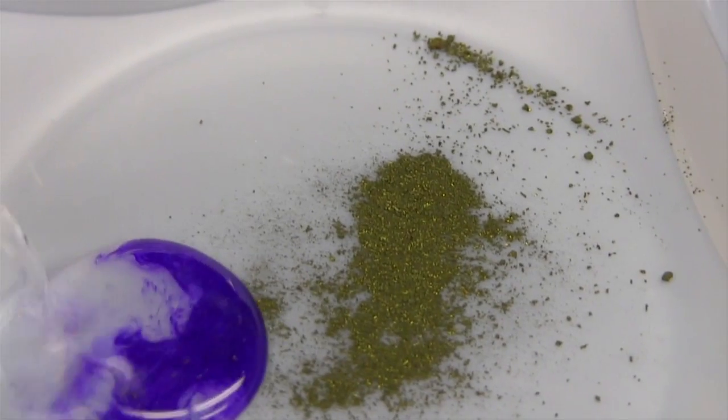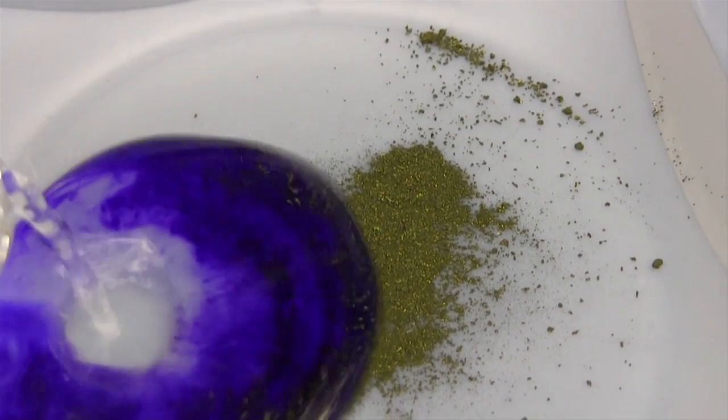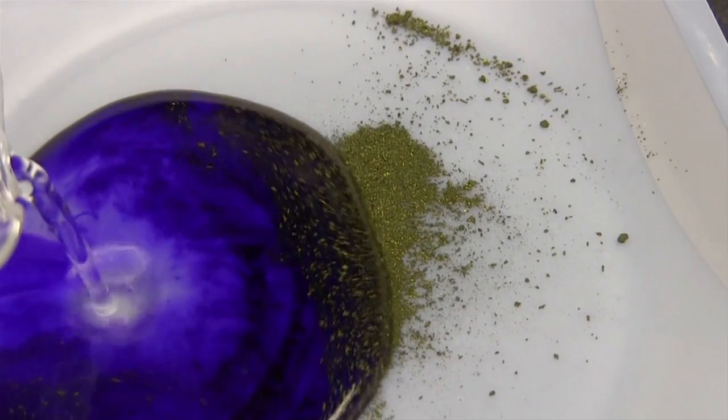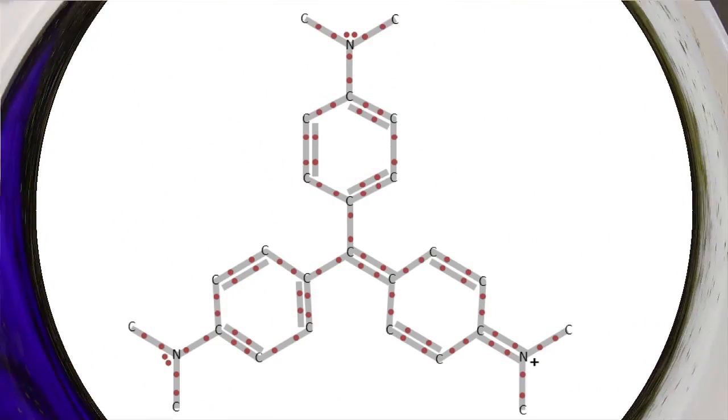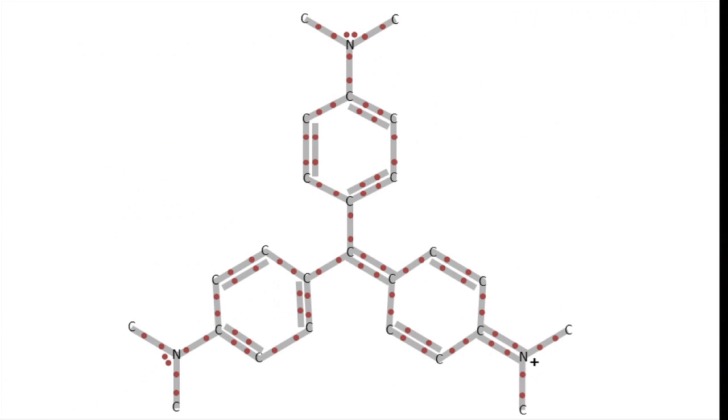It's a chemical that appears to be a dark greenish-yellow powder, but when we mix it with water, it turns into a vibrant violet solution. And at the molecular level, the crystal violet molecule looks like this.